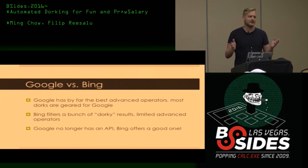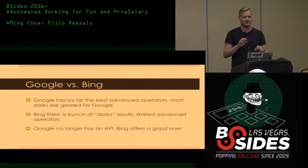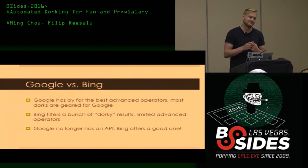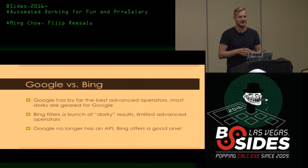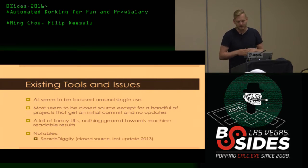Google has great advanced search operators. Most dorks you find, especially on the Google Hacking Database, are good for Google. Bing filters a bunch of dorky results — you can't find SQL files by searching for the file type extension, and it has limited advanced operators. On the flip side, Bing has an API while Google has removed their search API. They only provide a Custom Search Engine, which you can sort of trick into searching the whole web, but you get very limited results.